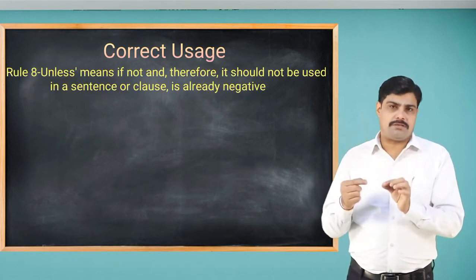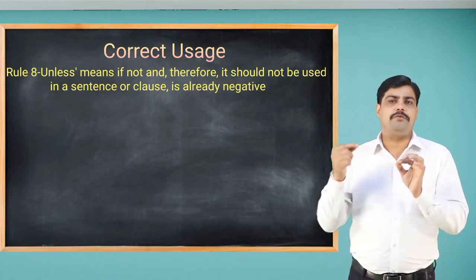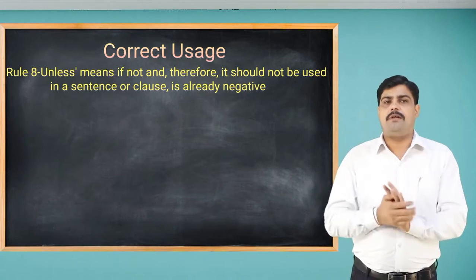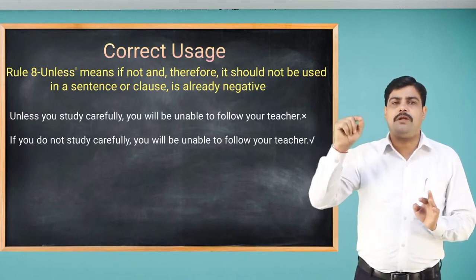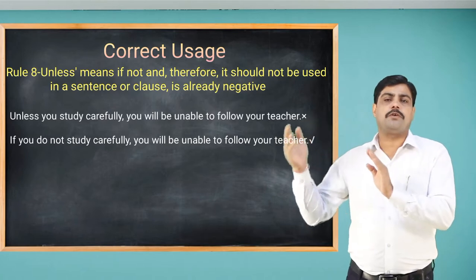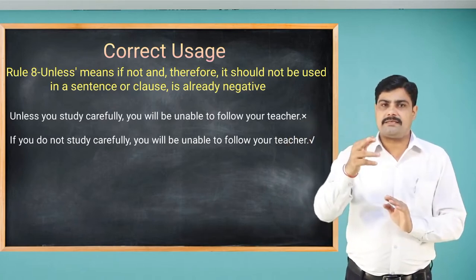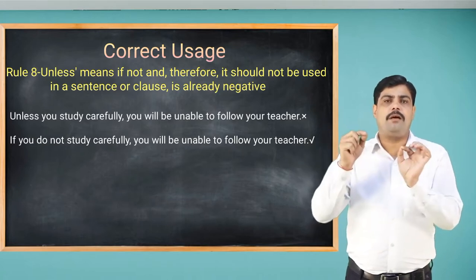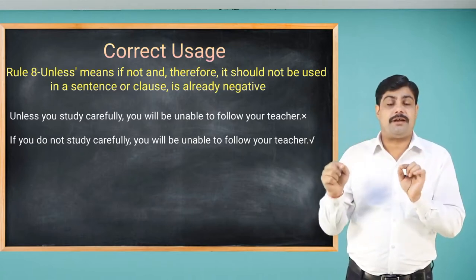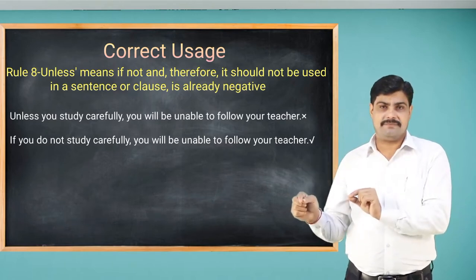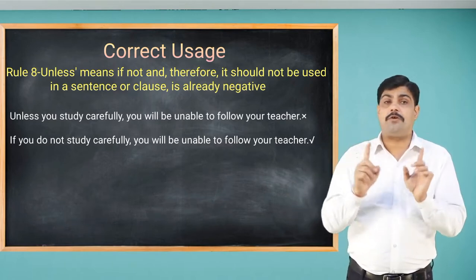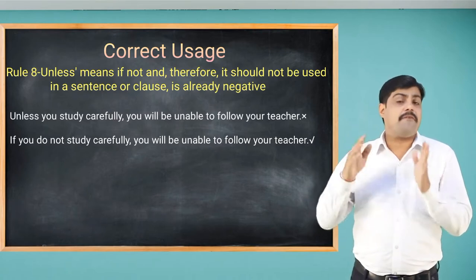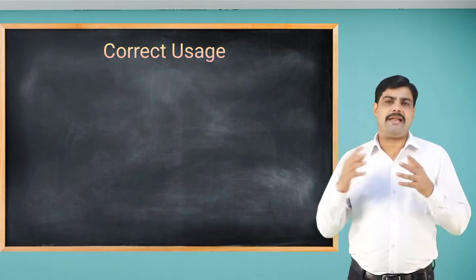'Unless' means 'if not' and therefore should not be used in a sentence or clause that is already negative. For example, 'Unless you study carefully, you will be unable to follow your teacher' is wrong because 'unable' makes it negative. Say: 'If you don't study carefully, you will be unable to follow your teacher.' This is the correct form.